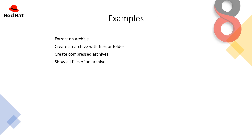Now let's look at some examples. The first example is how to extract an archive. The second one is how to create an archive with files or a folder. Then we have creating compressed archives, and then showing all files of an archive. Let's have a practical overview of them.